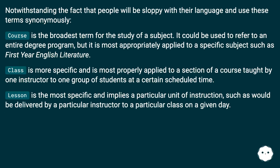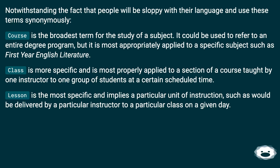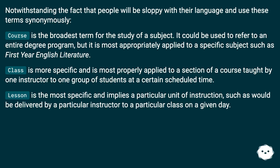Notwithstanding the fact that people will be sloppy with their language and use these terms synonymously: course is the broadest term for the study of a subject. It could be used to refer to an entire degree program, but is most appropriately applied to a specific subject such as first-year English literature. Class is more specific and is most properly applied to a section of a course taught by one instructor to one group of students at a certain scheduled time. Lesson is the most specific and implies a particular unit of instruction, such as would be delivered by a particular instructor to a particular class on a given day.